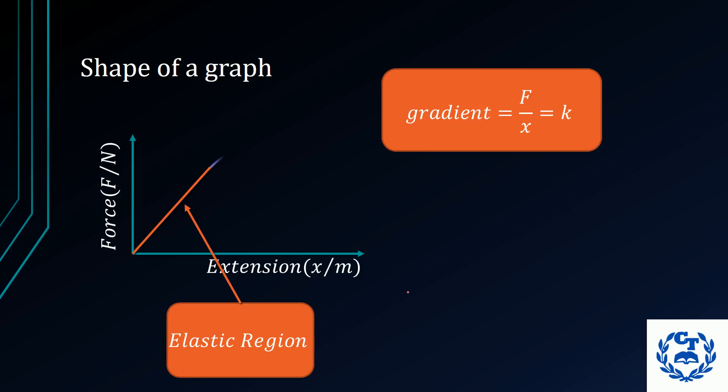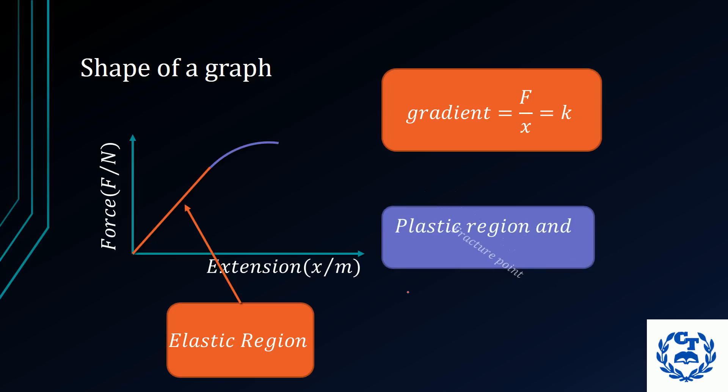Beyond this region, we have what is called the fracture point and the plastic region. The plastic region exists along this line where the body becomes permanently deformed, and the fracture point is at the end of that region when the body itself splits because it is no longer able to withstand the force.